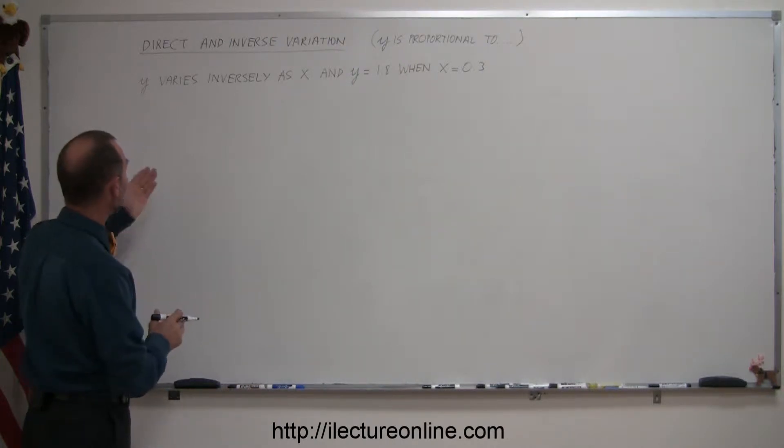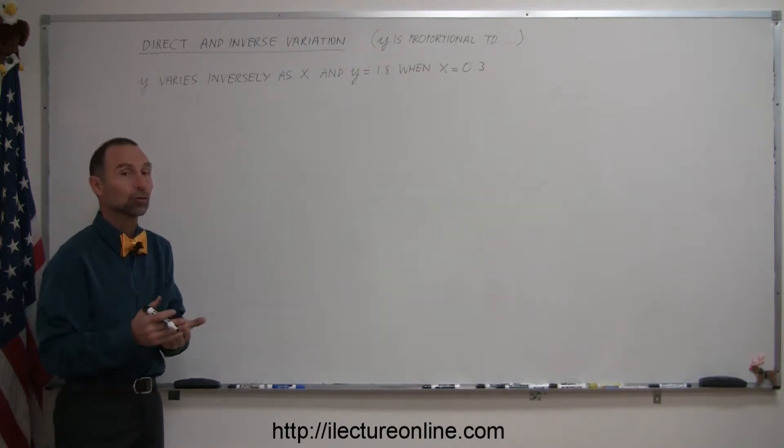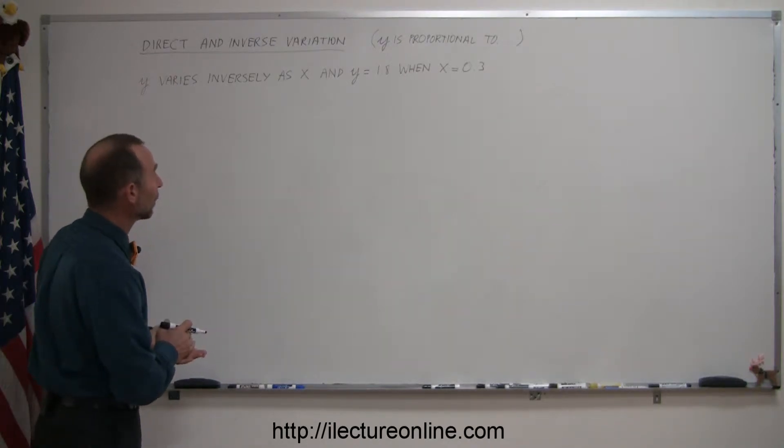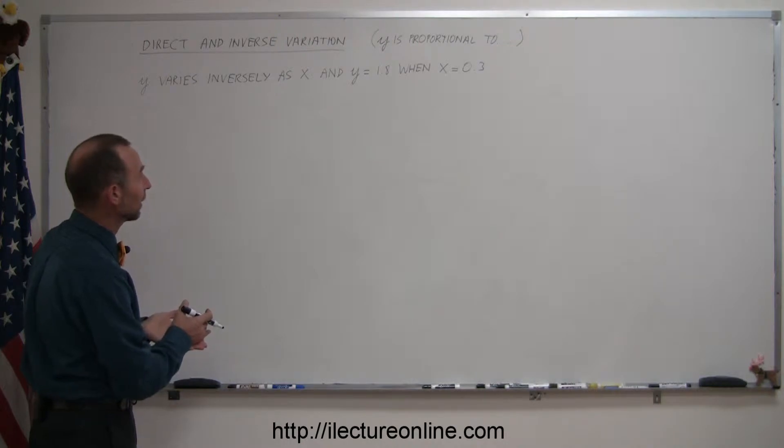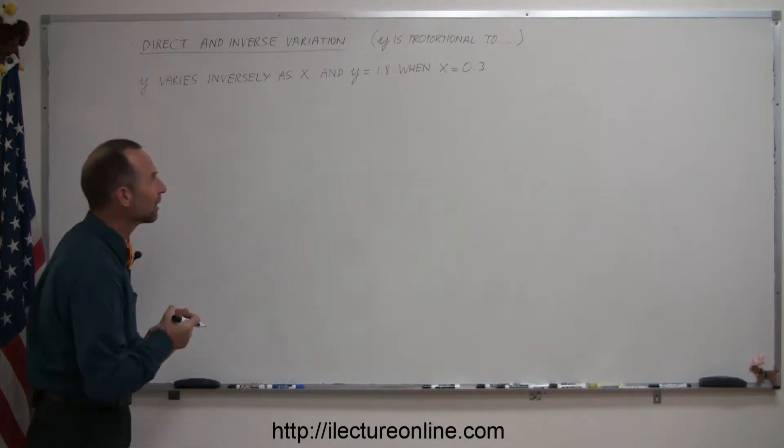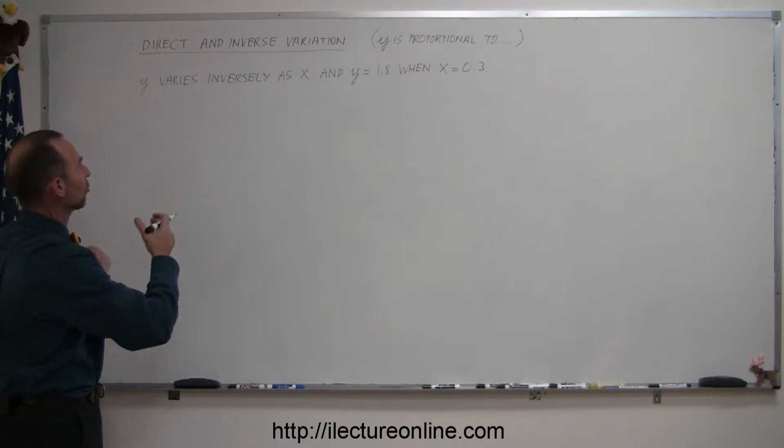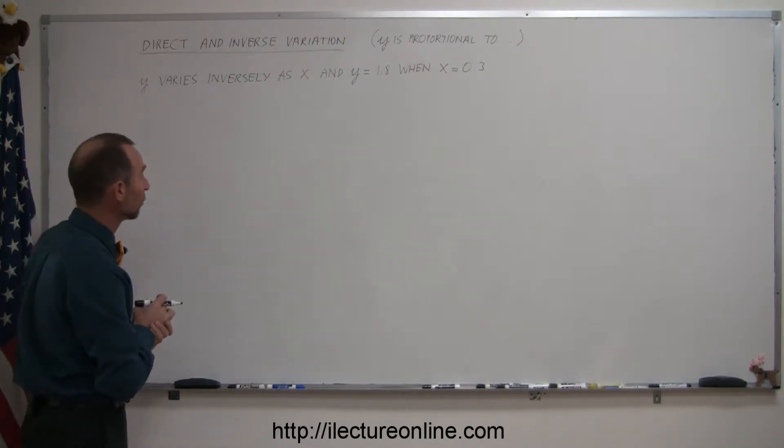In this case we have y varying inversely as x, or you can say y is proportional to the inverse of x. When x is equal to 0.3, y is equal to 1.8. So what we're trying to do here is come up with the constant of proportionality and the equation that describes the relationship between x and y given the following information.